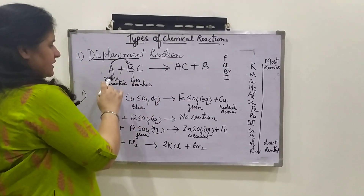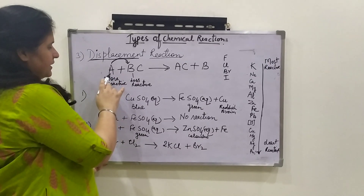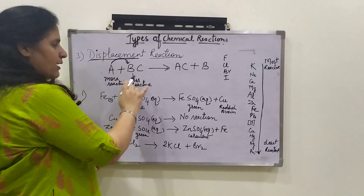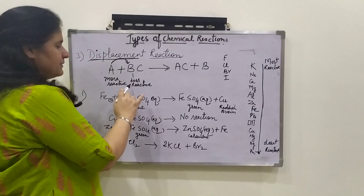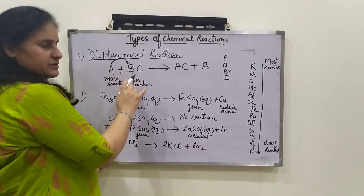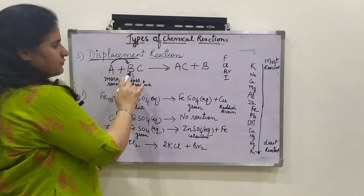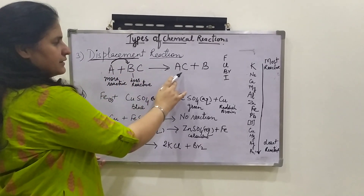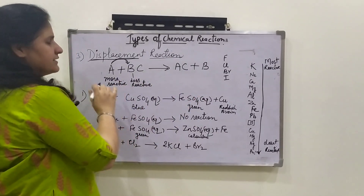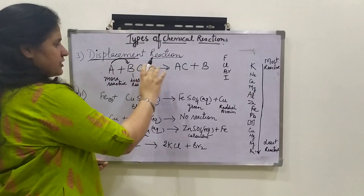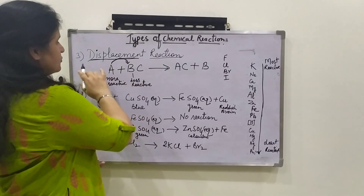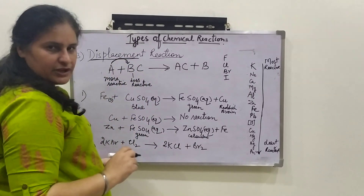This is the general equation for the displacement reaction. A is a reactive element that reacts with a compound which has a less reactive element compared to A. When they are made to react, A takes the place of B and forms another compound AC while B is pushed out. As A is more powerful, it pushes out B and takes its place forming the new compound AC.